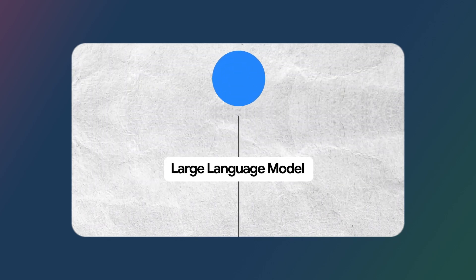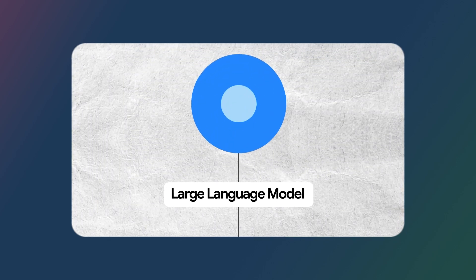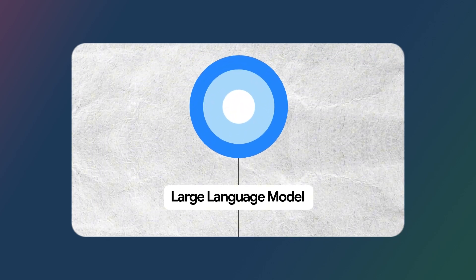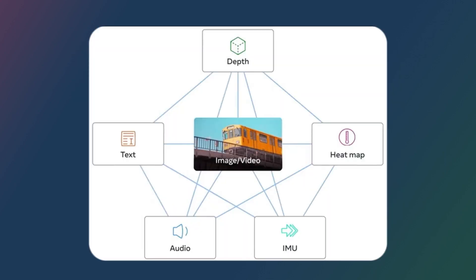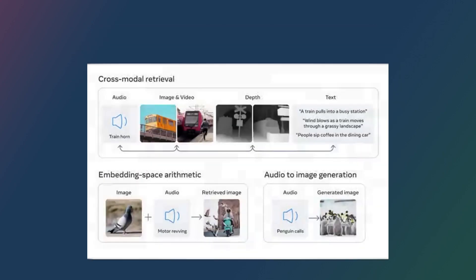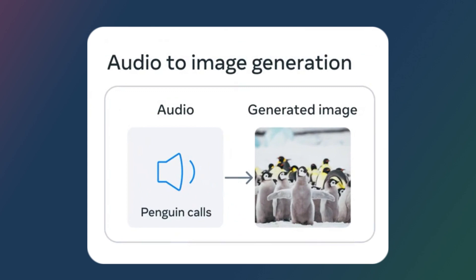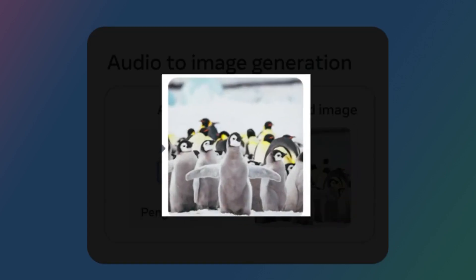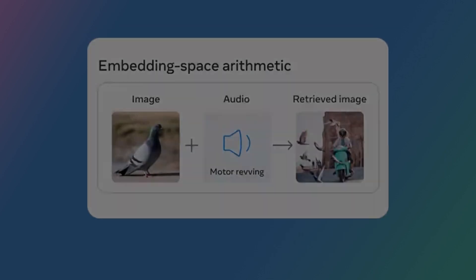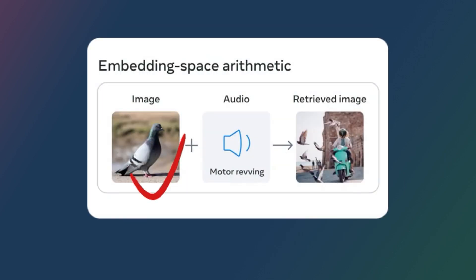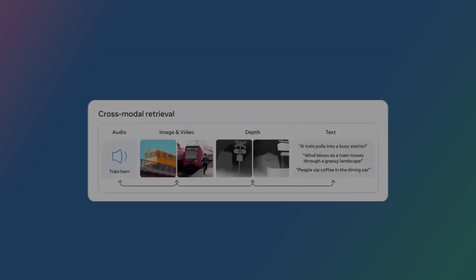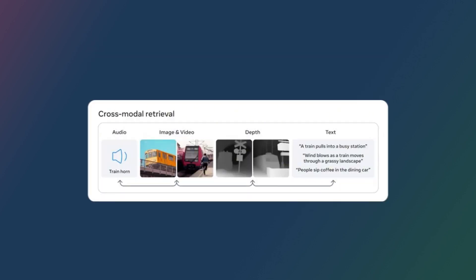Unlike large language models that excel in understanding and generating text, large multimodal models are adept at processing and generating information across multiple forms of data — be it text, images, audio, or video. This versatility enables them to grasp more nuanced and complex inputs, leading to richer, more accurate outputs.